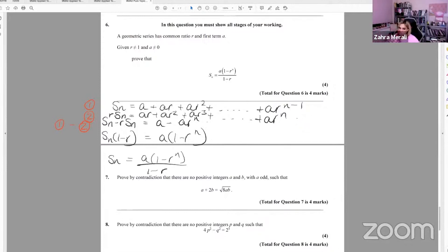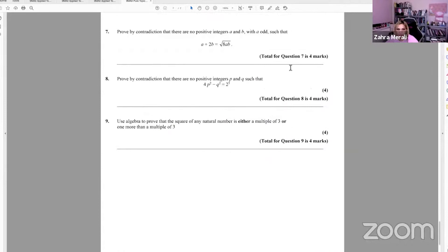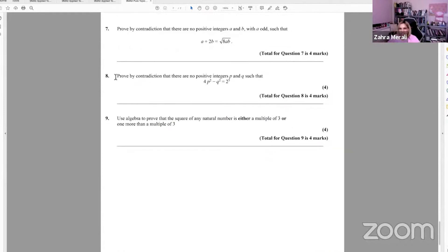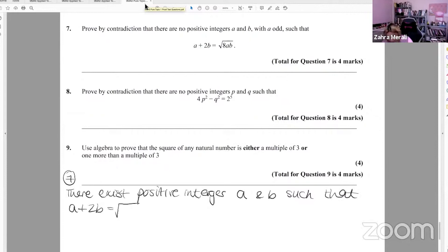Question seven. Prove by contradiction. So again, we've got a contradiction. So straight away, we're going to come up with our negation. So it's not quite an opposite, but it's like thinking about the opposite. Right? So there are no positive integers. So we're not going to say that all positive integers, we're just going to say there exists. I don't know what I've got enough space there. We'll do that here. So there exists. So this is question seven, positive integers a and b, such that a plus 2b equals root 8ab, and a is odd. So that's just a given.